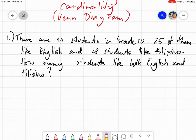So for example, let's have this problem. There are 40 students in grade 10. 25 of them like English. 28 students like Filipino. How many students like both English and Filipino?